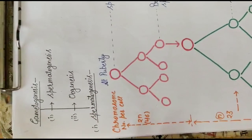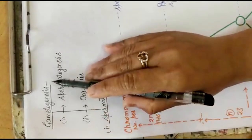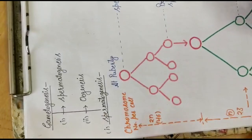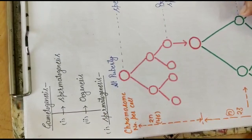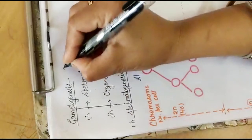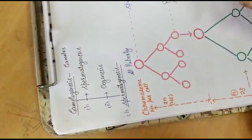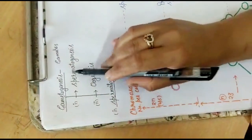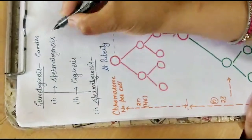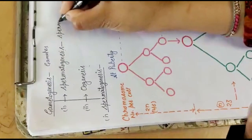Hello students, today we will discuss gametogenesis. We have already completed the structure of the male and female reproductive systems, and now we will study the formation of gametes. The process of formation of gametes is called gametogenesis. Gametogenesis is of two types: spermatogenesis and oogenesis.